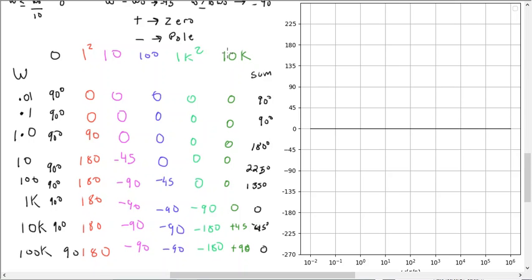And then that final zero at 10k, it is plus 45 at the break frequency. Zero, a tenth, and then plus 90. And then you just sum across.